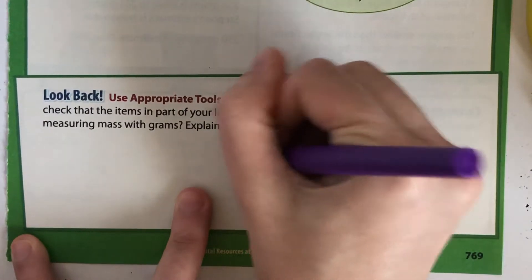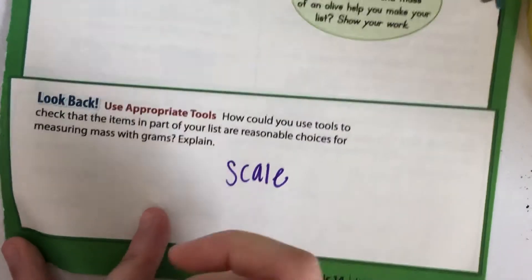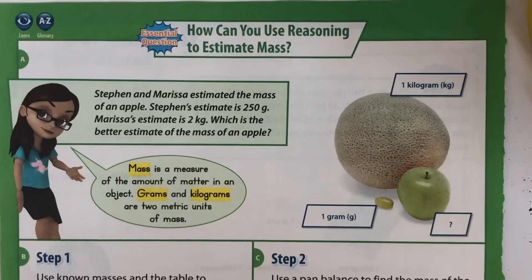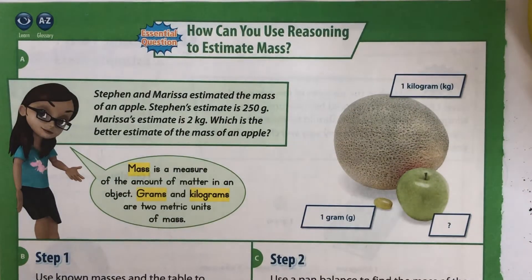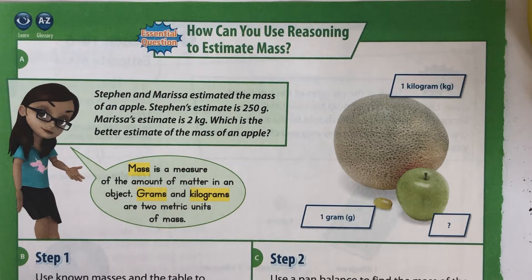You would want to use a scale. How can you use reasoning to estimate mass? Stephen and Marissa estimated the mass of an apple. Stephen's estimate is 250 grams. Marissa's estimate is 2 kilograms. Which is the better estimate of the mass of an apple?